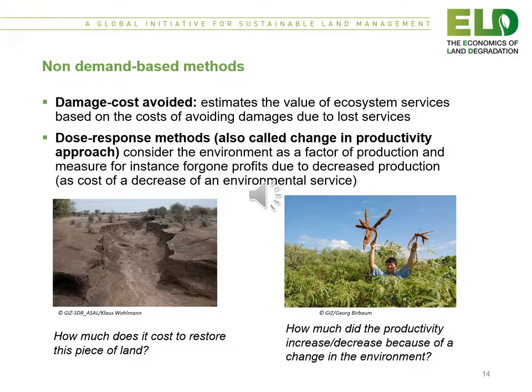The third non-demand based method is the damage cost avoided method, which estimates the value of ecosystem services based on the costs of avoiding damages due to lost services. Finally, the fourth method is the dose response method, also called a change in productivity approach. This considers the environment as a factor of production and measures, for instance, foregone profits due to increased production as a cost of decrease of environmental service.